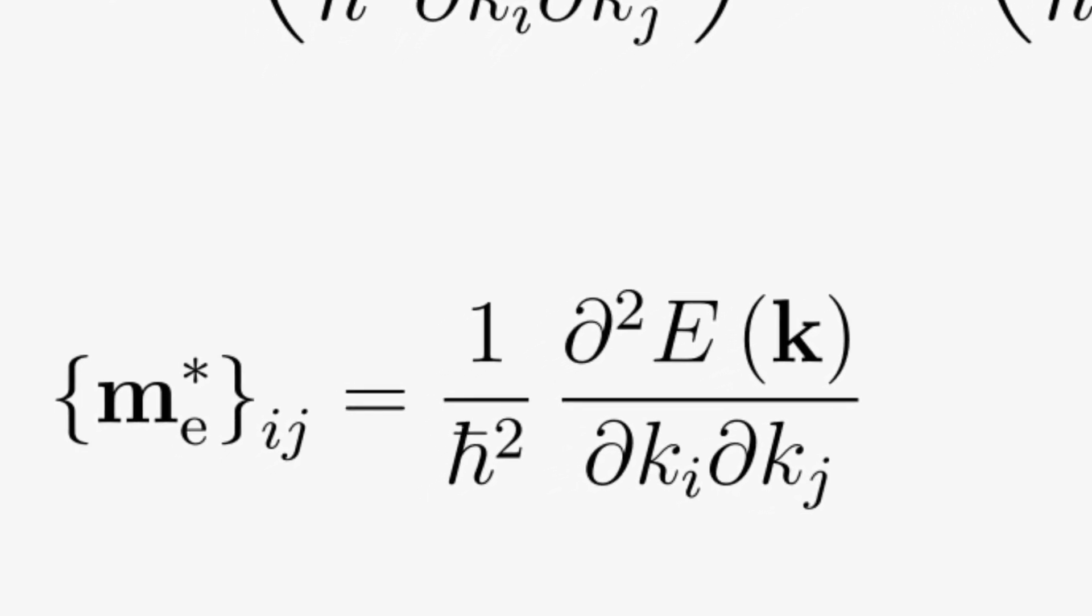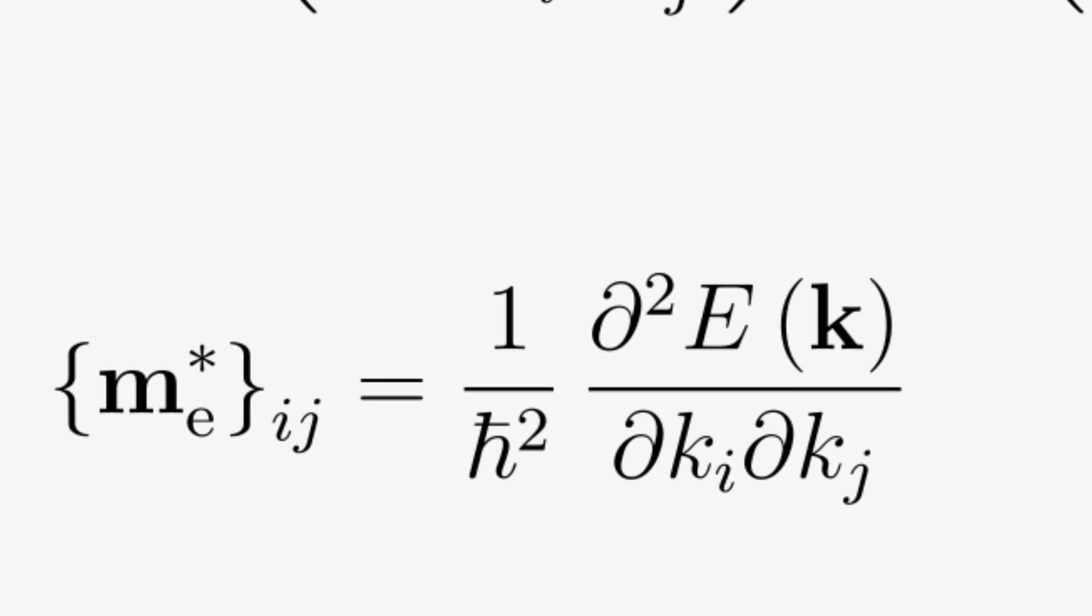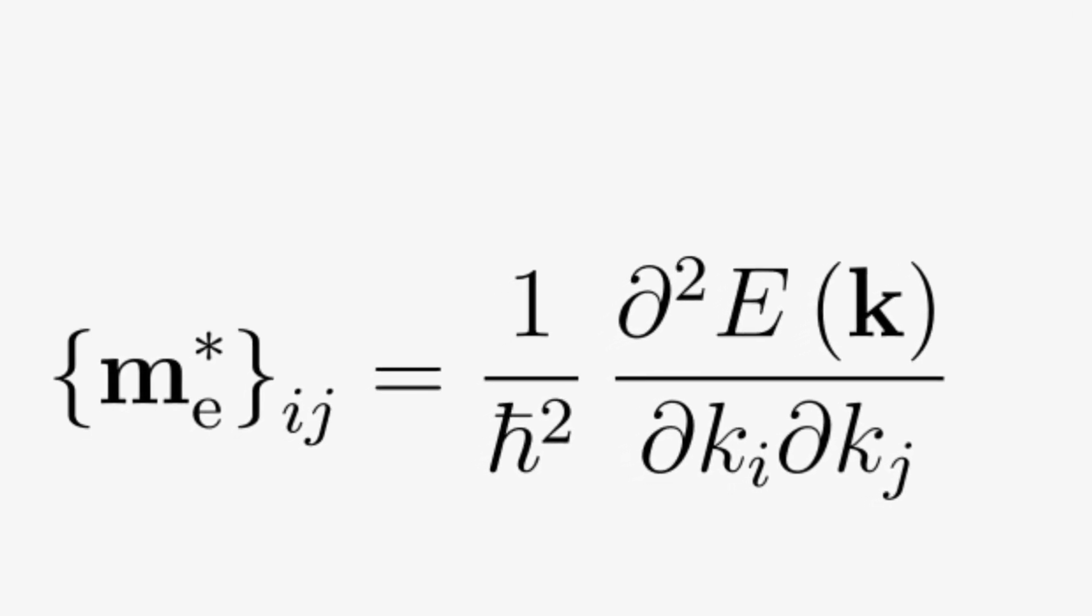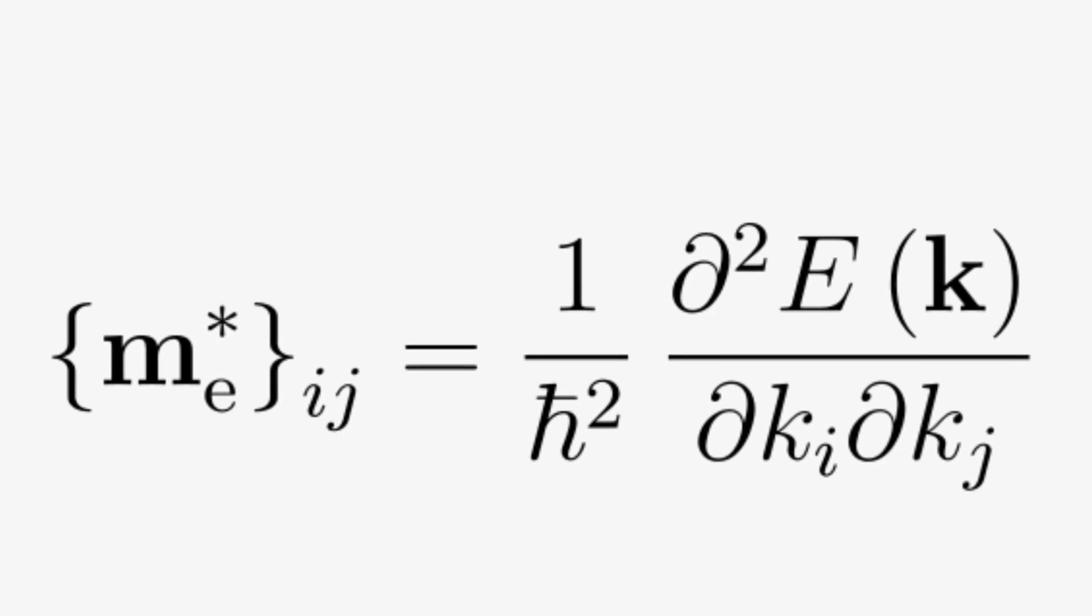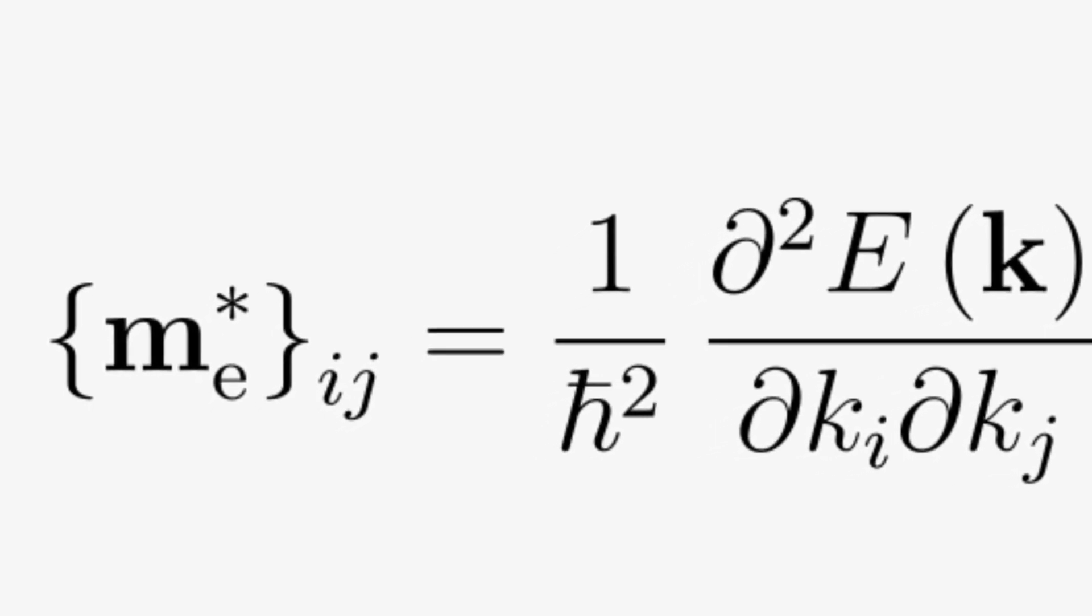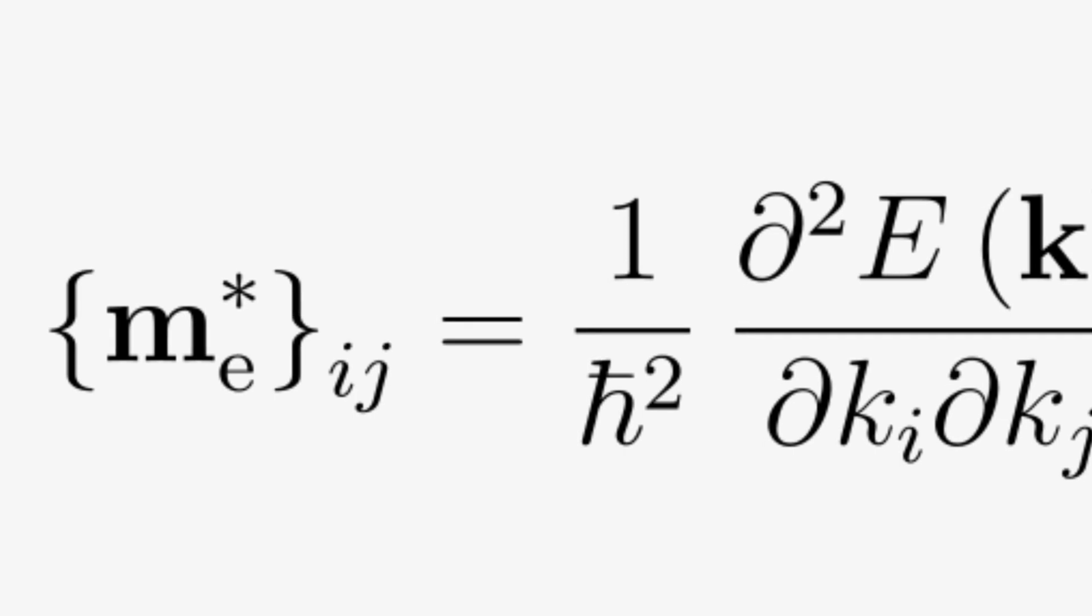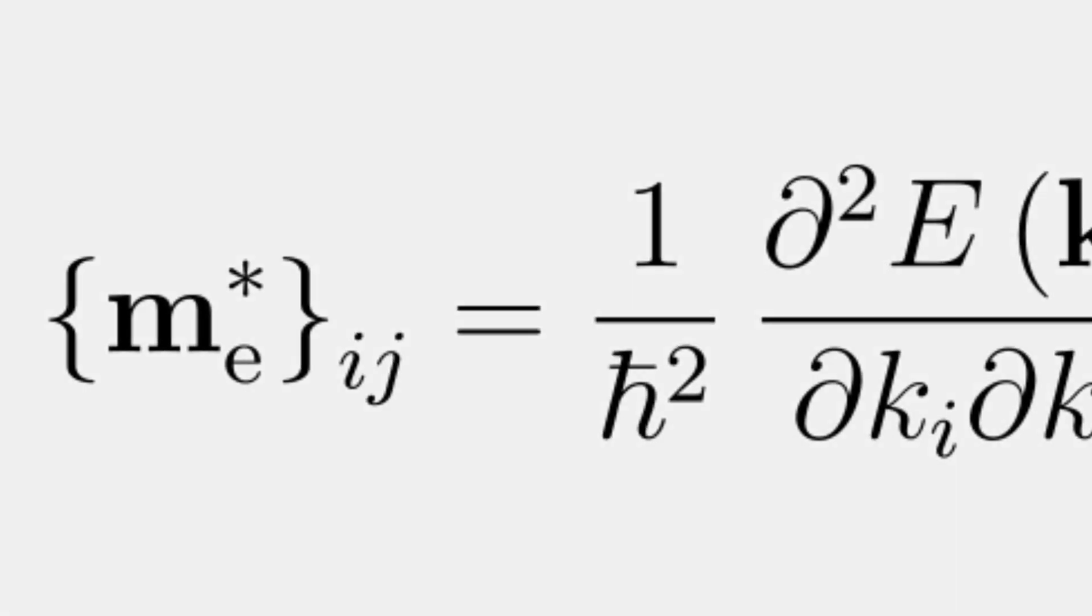As a result if a force acts on that electron a different acceleration may result. It may not only be different in magnitude but also in direction and the effective mass tensor is basically the quantity which relates these two force and acceleration.